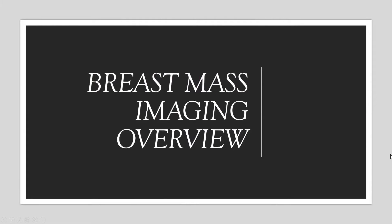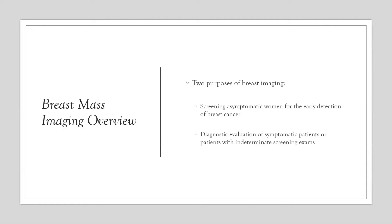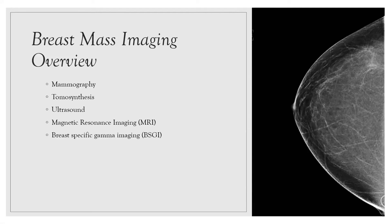For a general breast mass imaging overview: we have two purposes with breast imaging — screening asymptomatic women for early detection of breast cancer, or performing diagnostic evaluations for symptomatic patients or those with indeterminate screening exams. Several modalities are used, including mammography, tomosynthesis or 3D mammography, ultrasound, MRI, or breast-specific gamma imaging. Today we're primarily talking about mammography and ultrasound for evaluating echogenic breast masses.